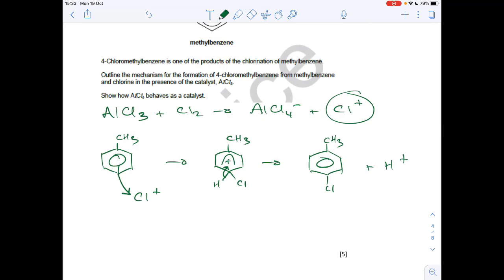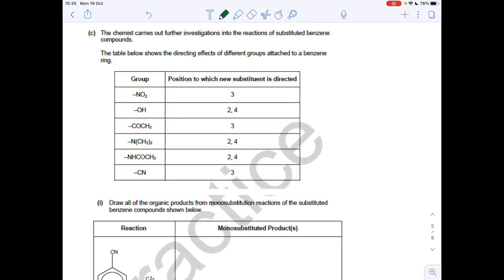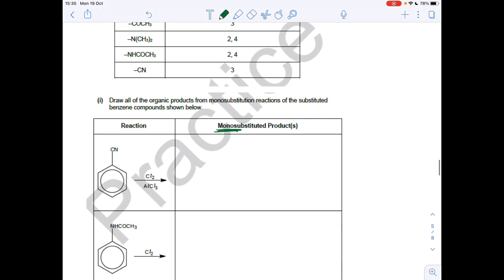And then finally to show how the AlCl3 acts as a catalyst we need to reform it basically. So AlCl4 minus plus that H plus goes to HCl and AlCl3. Part C we've got to use the information in the table about the directing effects of different groups to come up with the mono substituted product from these two reactions.